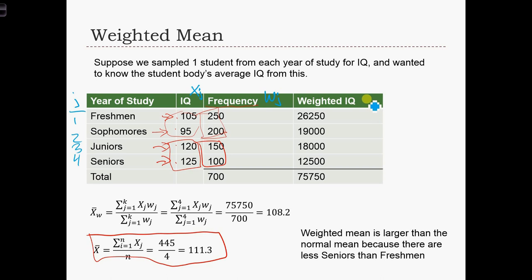And then the weighted IQ is xj times wj. So to get this, we've just done 105 times 250. Or over here, we've done 125 times 100. That's how we get this weighted IQ column, the xj wj.